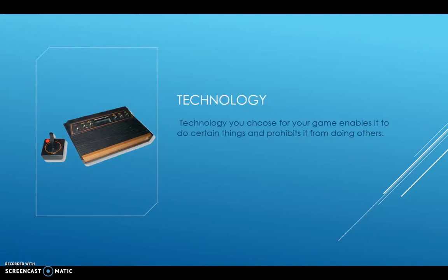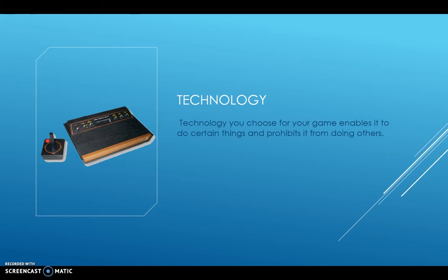Technology is one of the first things you should consider. If you're making an analog game like a board game, the technology is straightforward — you've got the board and the cards. But if you're working on a digital game, for instance a mobile game, designing and developing for mobile is very different. You don't have joypads, and the processing power is less. All these considerations have to be taken into account before you start designing your game.